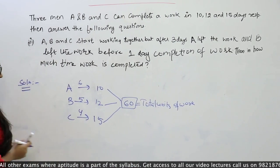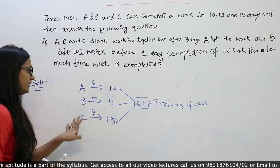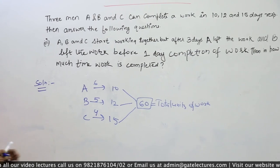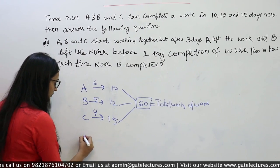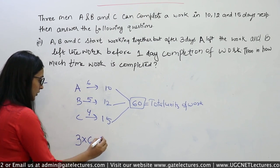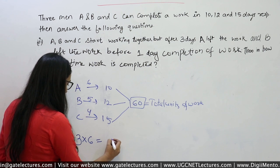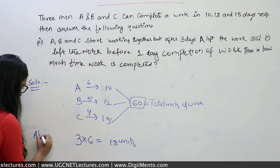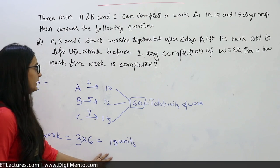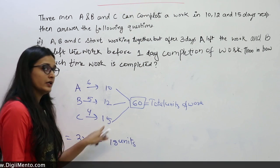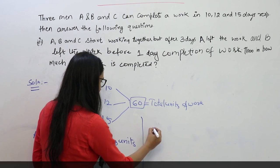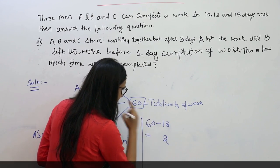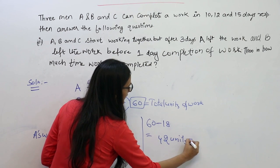We will move toward the solution. A किसी काम को 10 दिन में कर रहा है, B किसी काम को 12 दिन में कर रहा है, C 15 दिन में. हमने LCM लिया, तीनों की efficiency निकाली. First of all, we will find the 3-day work of A — multiply 3 days with the efficiency of A. We get the number of units of work done by A, that is 18 units. This 18 units is subtracted from the total work. Remaining work हमारा 42 units आ गया.